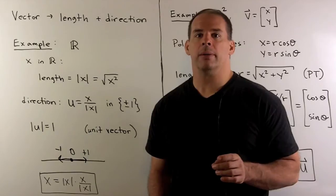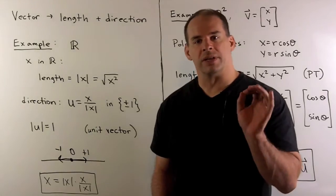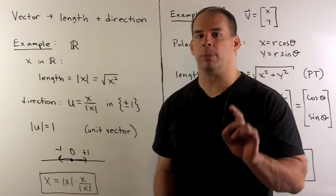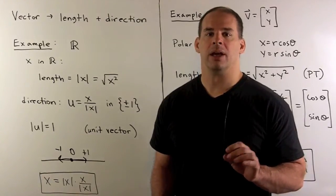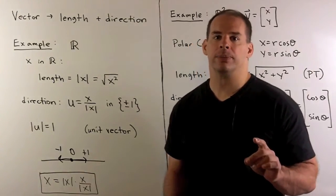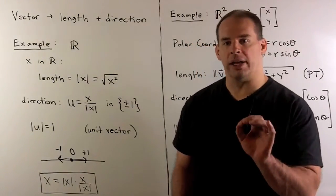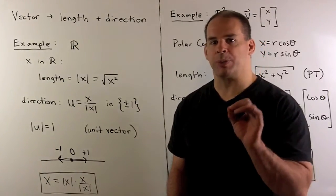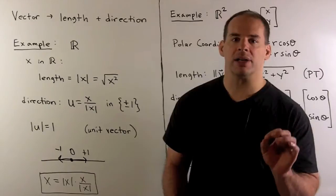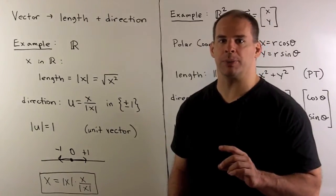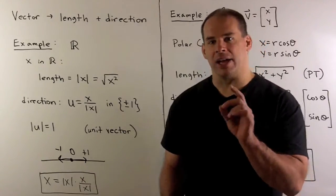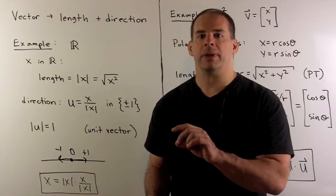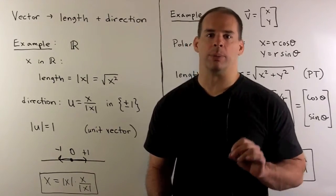Up to this point in linear algebra, we've considered vectors as quantities that we can add and that we can multiply by scalars. The kinds of questions we've asked: when is a set of vectors linearly independent? When does a set of vectors span a subspace? When does a set of vectors form a basis for a subspace? The answers for these questions only depend on addition of vectors and scalar multiplication.